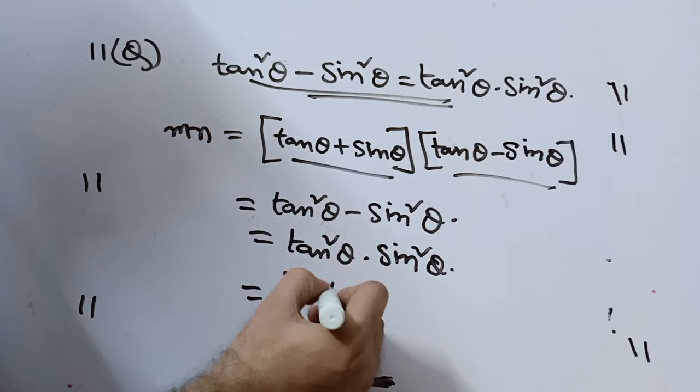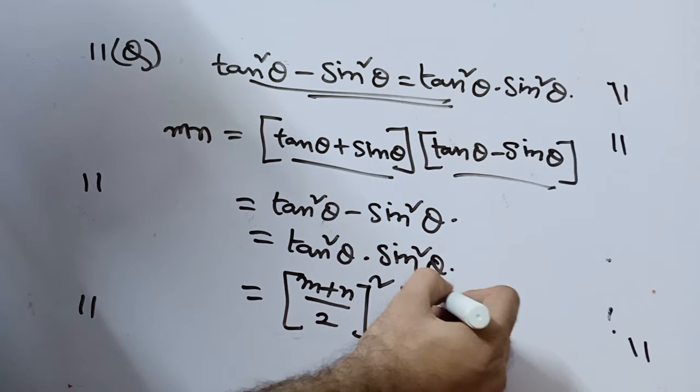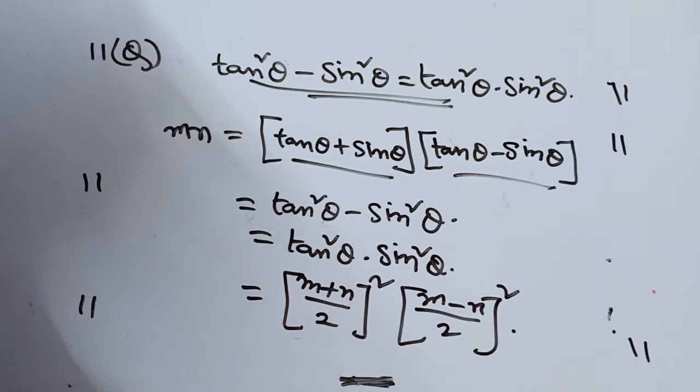What is tan theta? I just got m plus n by 2. I can substitute that square. And sin theta is m minus n by 2, and square. That is how I eliminate theta. We are done.